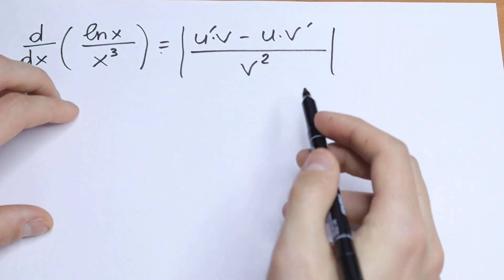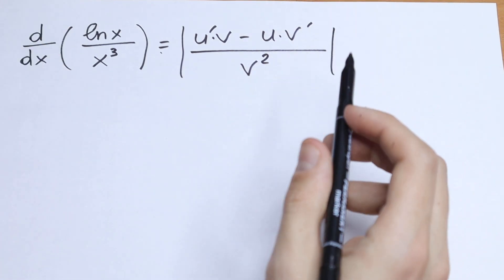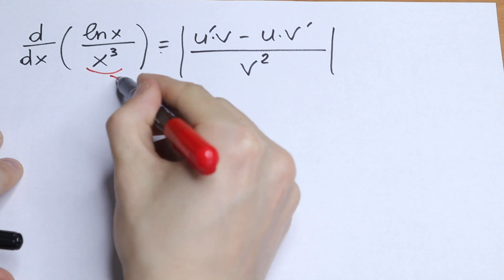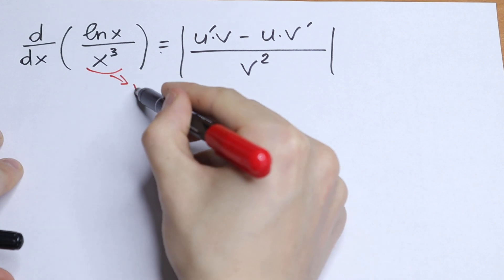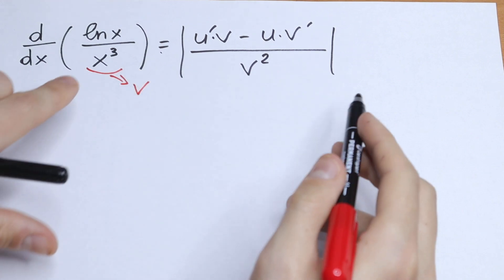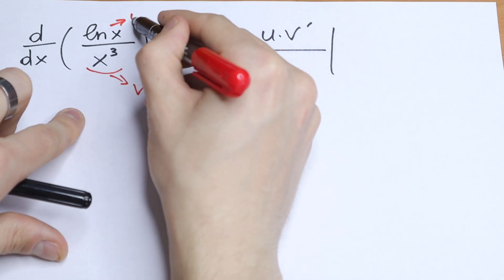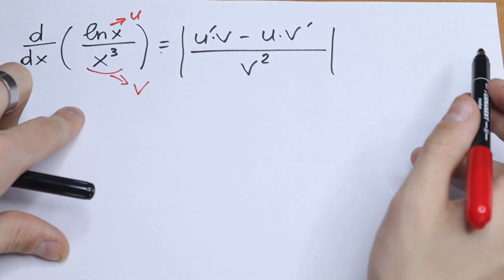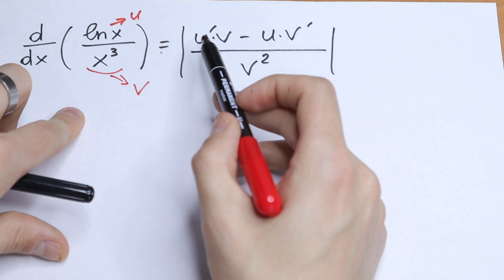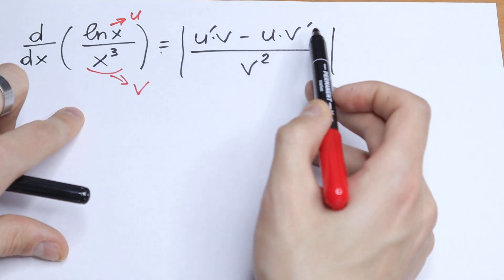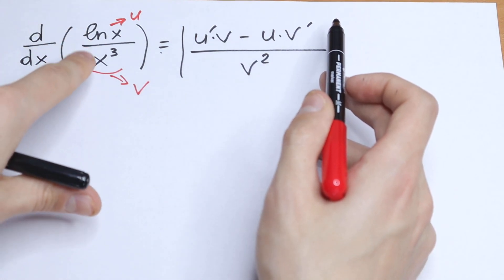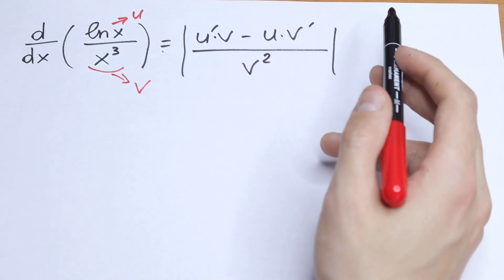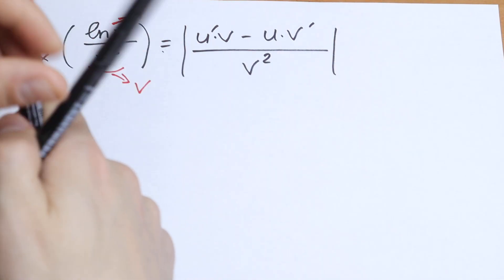So let's find our u and our v. In our case, x cubed will be our v, and natural log x will be our u. We need the derivative of u and the derivative of v — that is, we need to find the derivative of both the numerator and denominator.